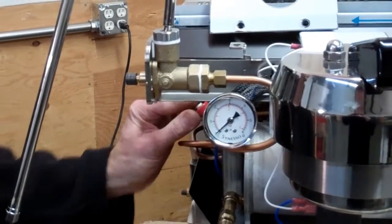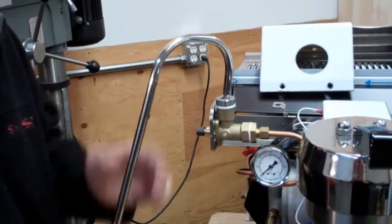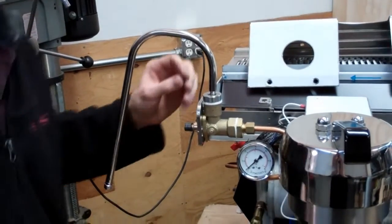With this ball valve turned 90 degrees to make sure the steam valve is isolated, the next step is to remove the steam wand.